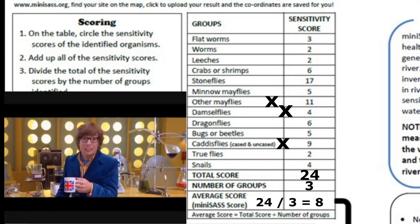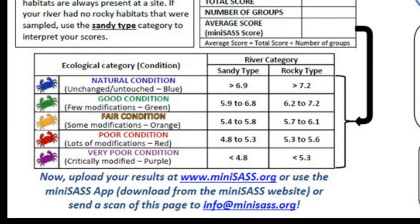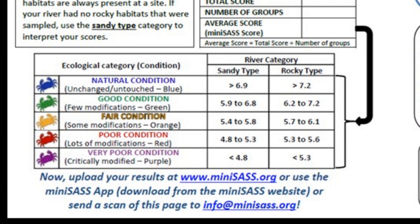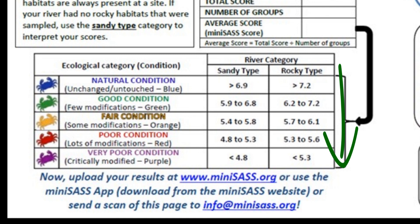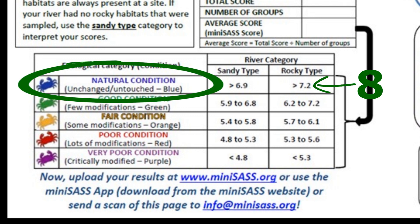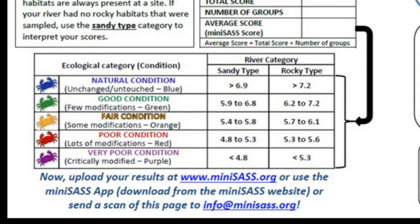We calculate our Mini-SASS score by taking the total score and dividing it by the number of invertebrate groups recorded. We have obtained a score of 8. But what does it all mean? At the lower section of the sheet, we have a sandy river and a rocky river column, based on the substrate present on the riverbed. We were in a rocky part of the river and compare our value of 8 with those in the rocky type column. Our value of 8 is greater than 7.2, which means we have a natural or pristine river condition. If we had a score of 6.9, it would fall between 6.2 and 7.2 and the river would have been in a good condition.